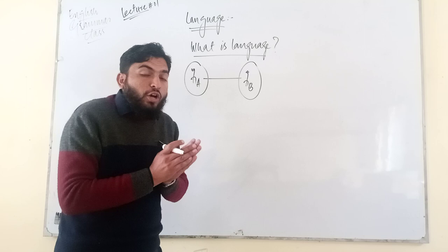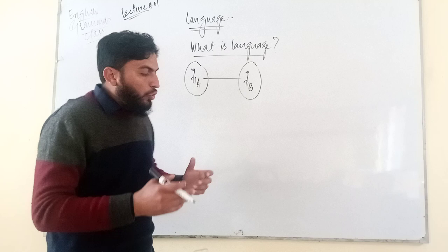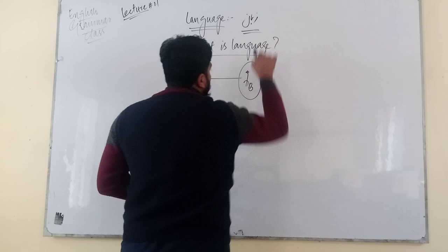اسی لیے ہم کہہ سکتے ہیں کہ body number A اور body number B کے درمیان تعلق کے لیے یہ جو ہم گفتگو کا ذریعہ بناتے ہیں, اس ذریعہ کا نام کیا ہے - this is called language. So we simply say that language in Urdu means زبان.